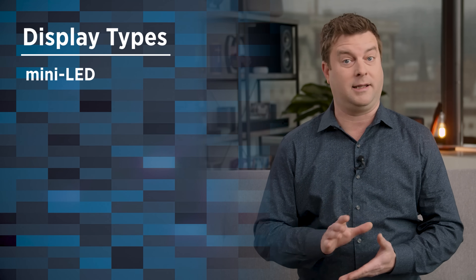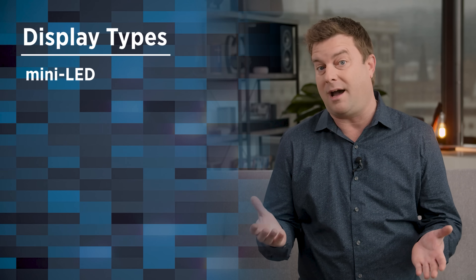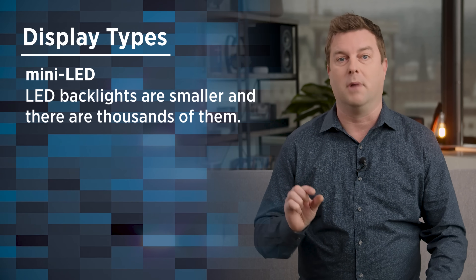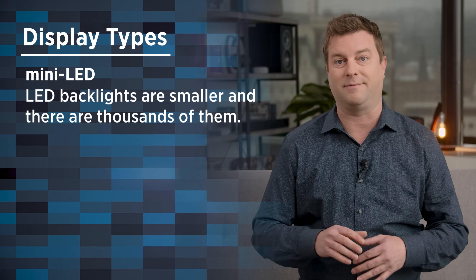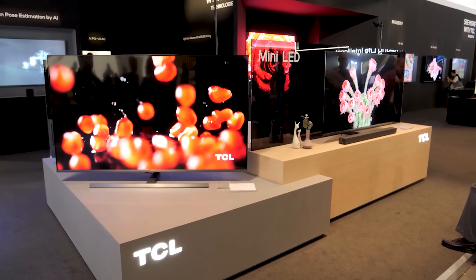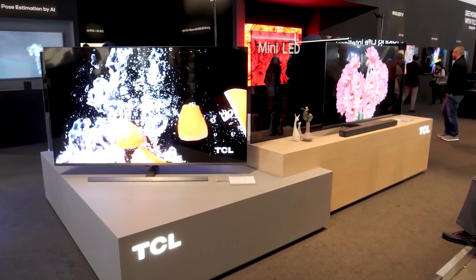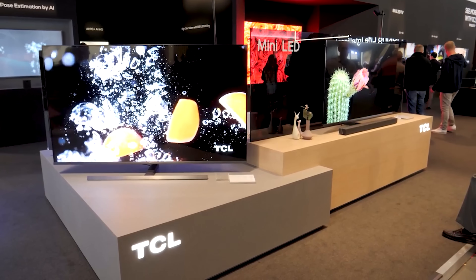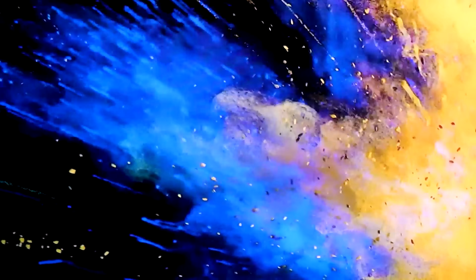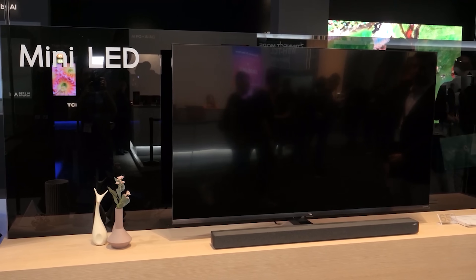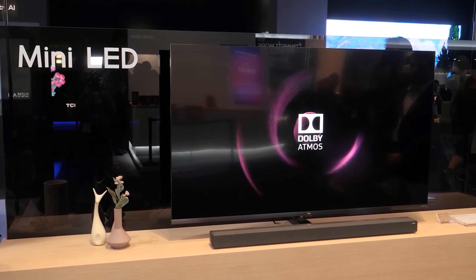Onward now to Mini-LED. This is also an LED TV, and in fact it's probably a QLED TV too with those Quantum Dots in play, but the LED backlights are much, much smaller, and there are thousands more of them. What that gets you is better control of the lights behind the LCD panel, and that usually means better black levels, sharper lines around bright objects on a dark background, and better overall contrast. Right now, this is the most advanced type of LCD-based TV, and we do expect to see lots more of this technology in 2021.